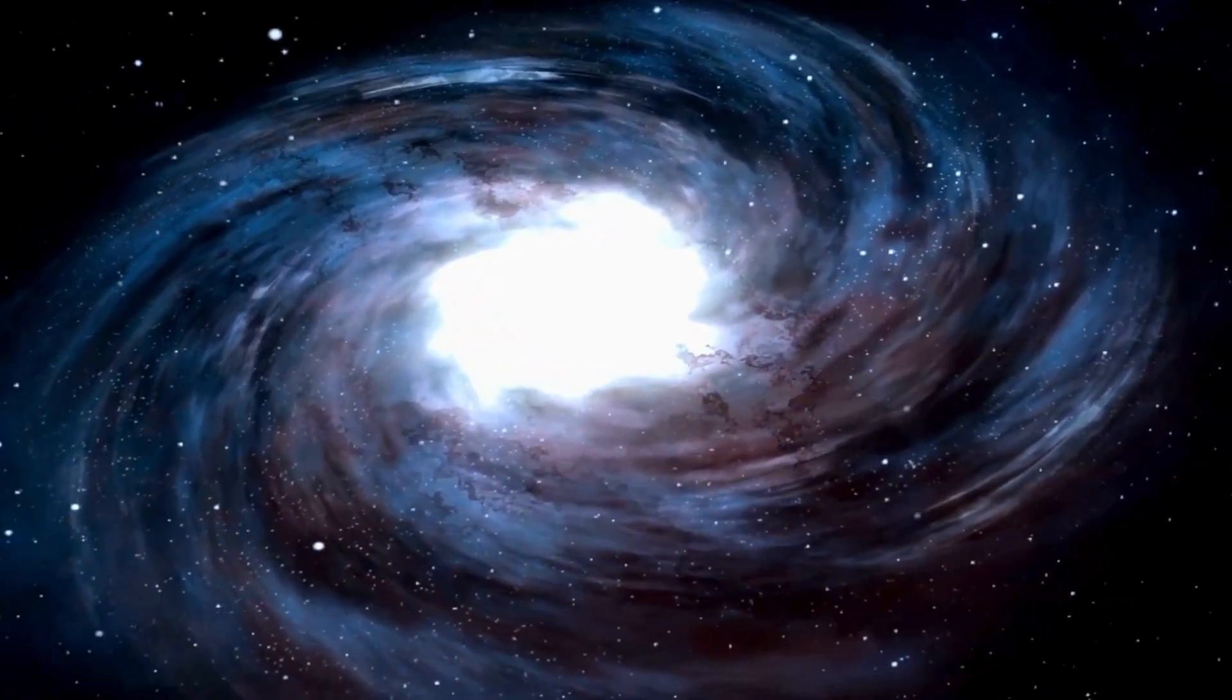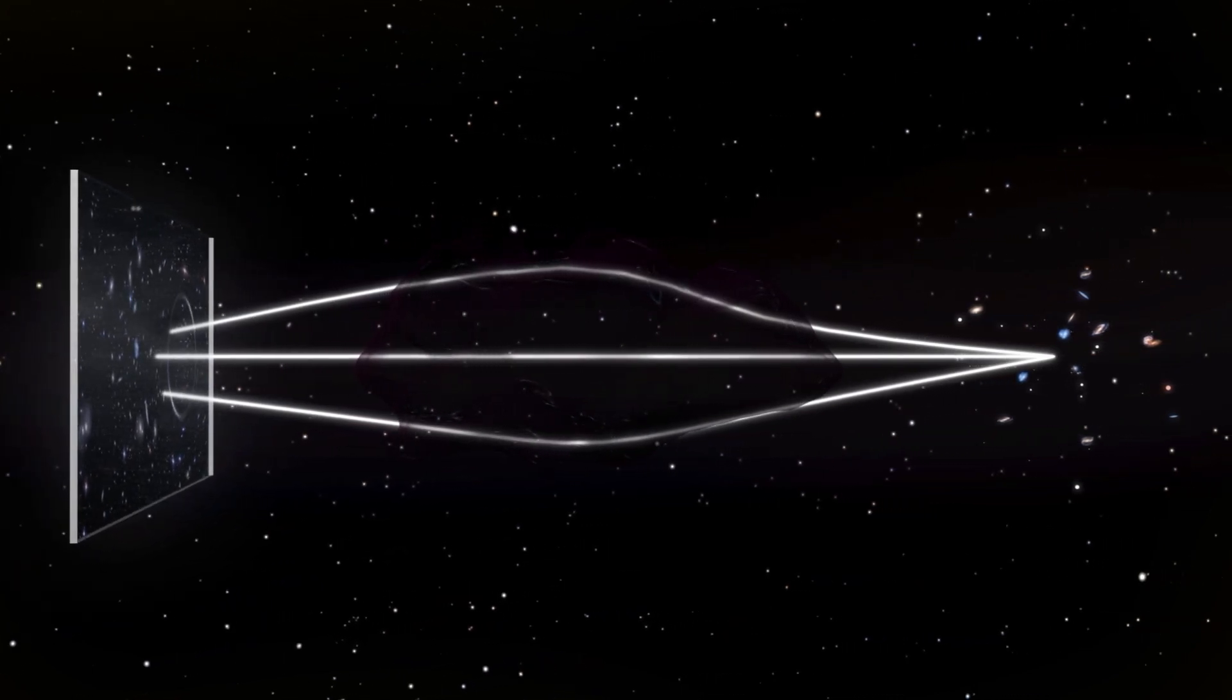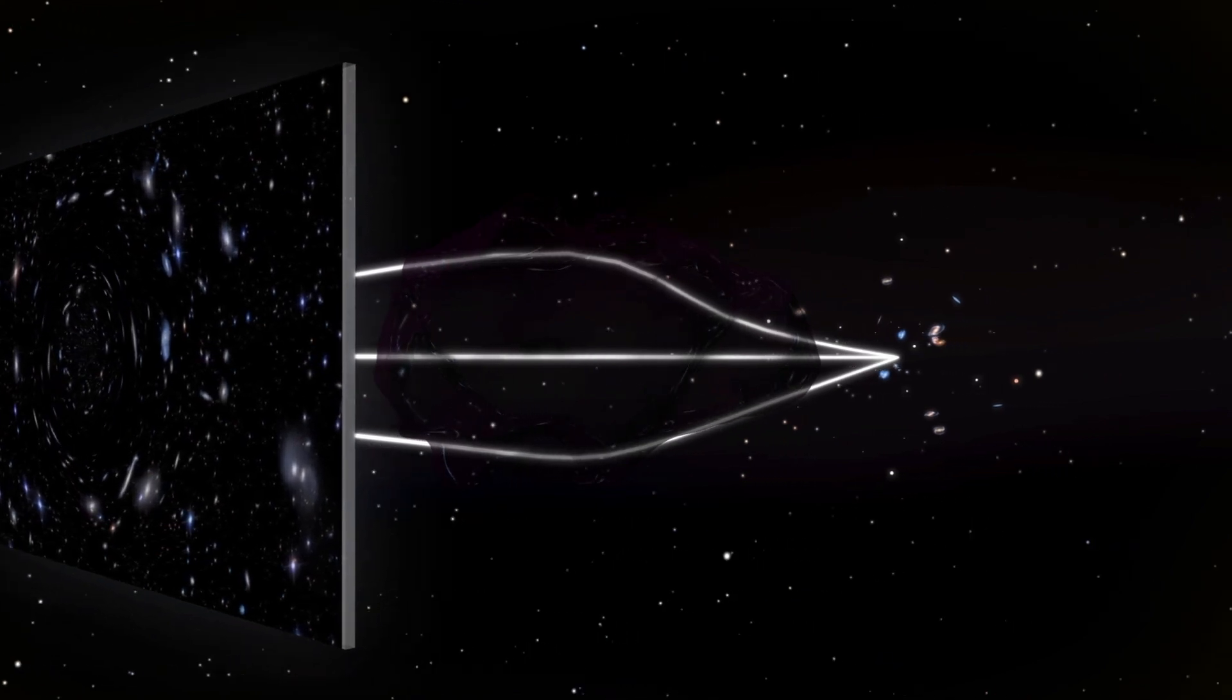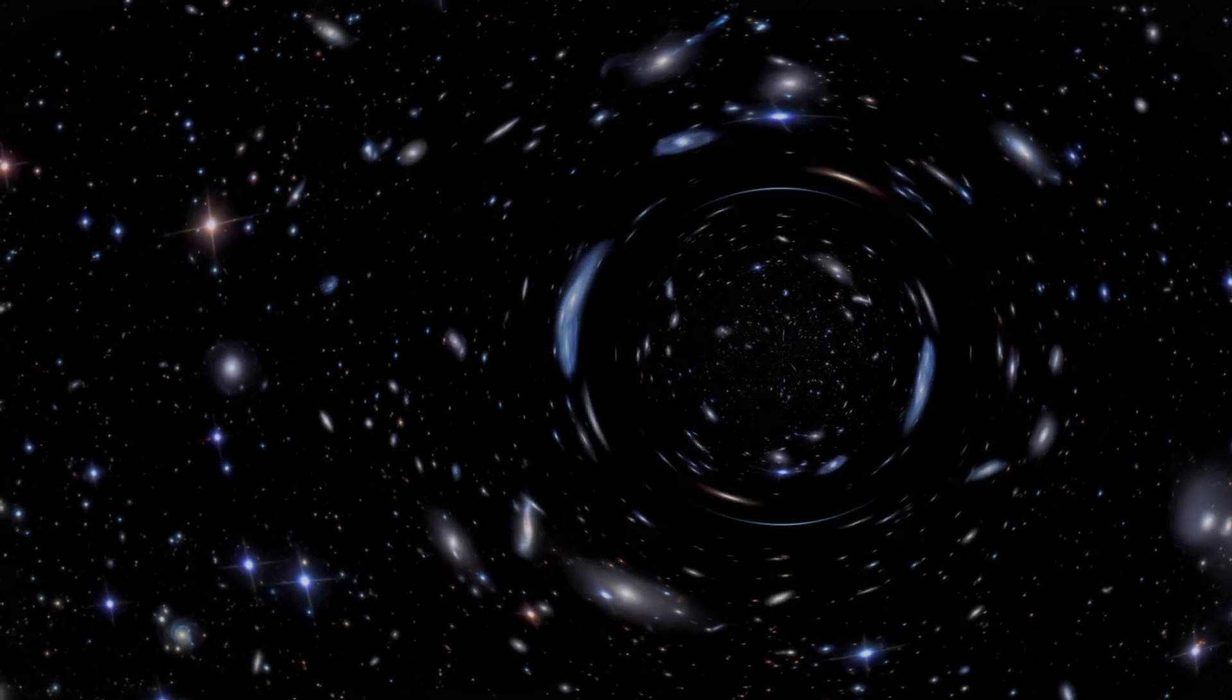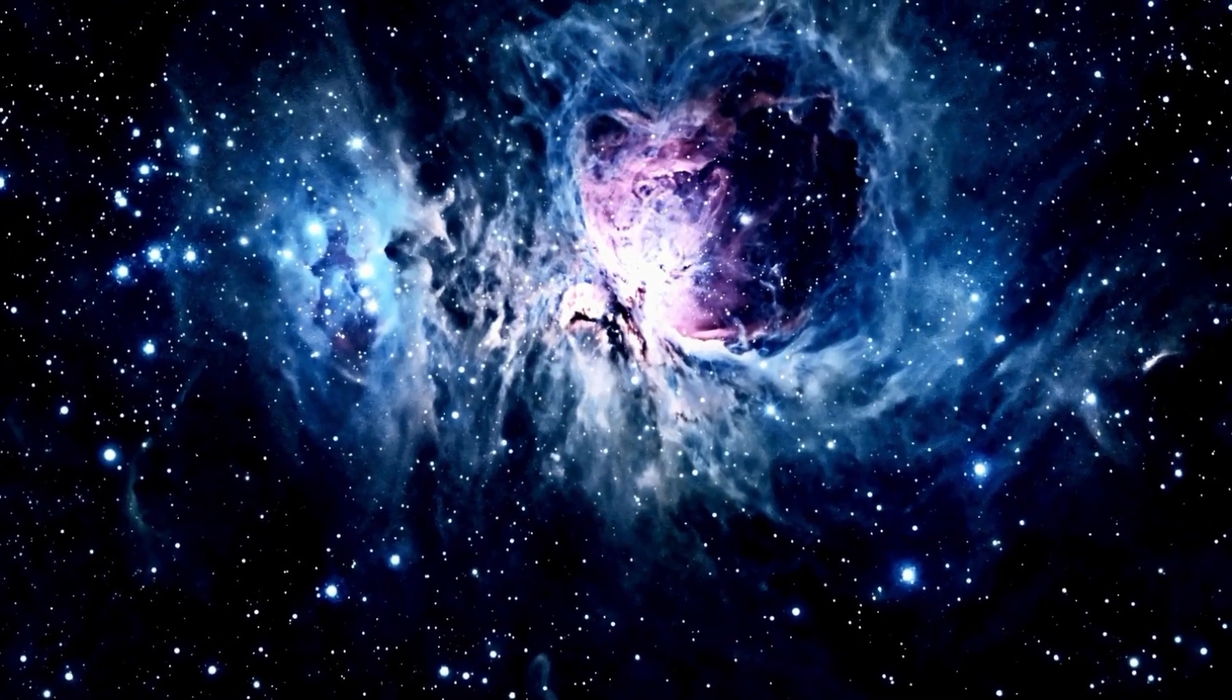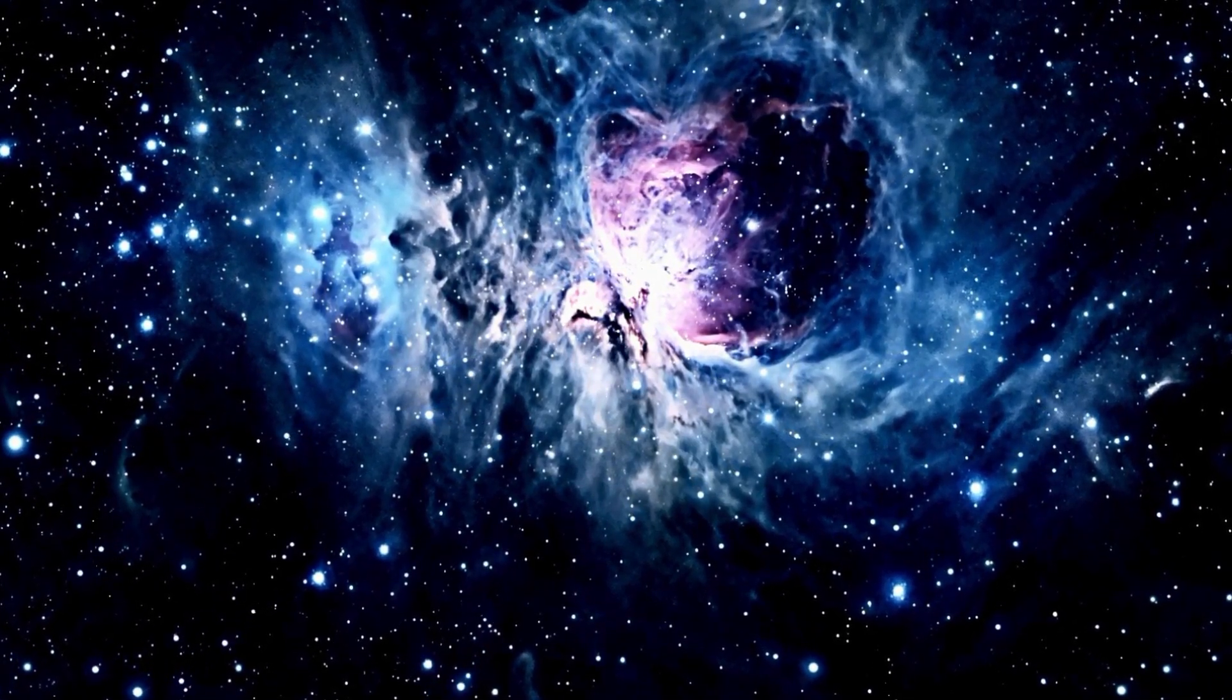One way to spot MACHOs is by looking for events called microlensing. It happens when a black hole crosses in front of a faraway star or galaxy. The black hole acts like a lens and makes the light from behind it brighter and bigger. Microlensing is rare and quick, but if we see enough of it, we can figure out what the black holes are and if they are primordial.